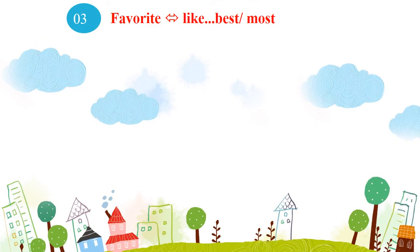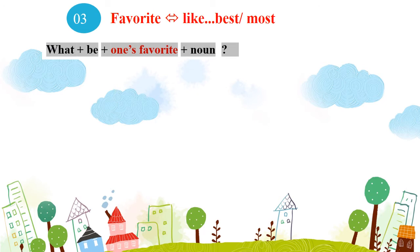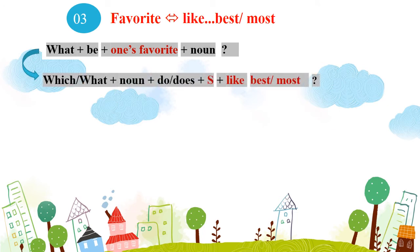Qua mẫu câu số 3: Favorite – Yêu thích nhất. Chúng ta viết lại thành "like best" hoặc "like most". Để hỏi người nào đó thích gì nhất, ta có thể dùng một trong hai cách: Cách thứ nhất: "What + be + someone's + favorite + noun?" – Yêu thích nhất của ai đó là gì? Cách thứ hai: "What + noun + do/does + someone + like best/most?" – Ai đó thích gì nhất?